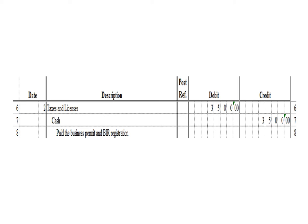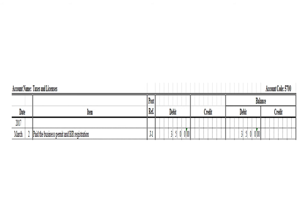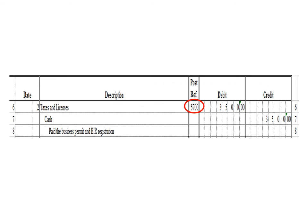Our second journal entry is a debit to taxes and licenses for $3,500 and a credit to cash for $3,500. Let us post the debit entry. This is the taxes and licenses ledger. To post the debit entry, we write the date March 2, the description: pay the business permit and BIR registration, posting reference J1. Under the debit column, we write $3,500, and in the balance section under the debit column, we write $3,500. After posting, we write the posting reference 5700, the account code for taxes and licenses.